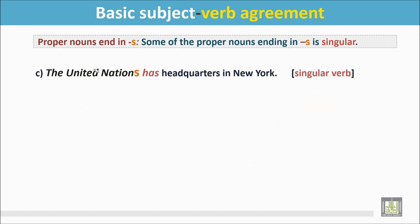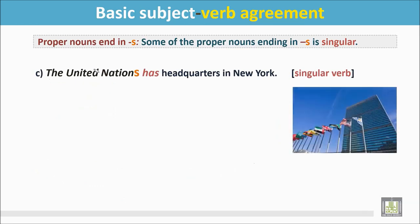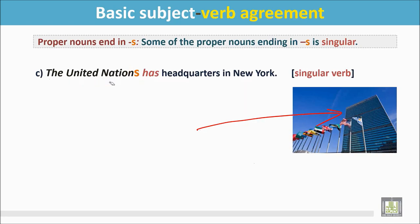Number C: The United Nations has headquarters in New York. This is the headquarters of the United Nations. It is a proper noun that ends in S, but it is not plural — it is a singular noun, so the verb is singular.